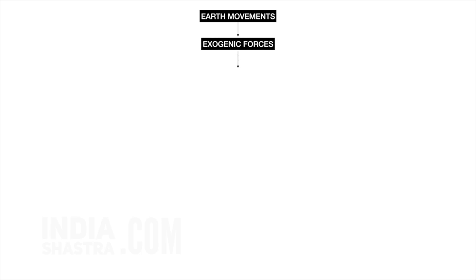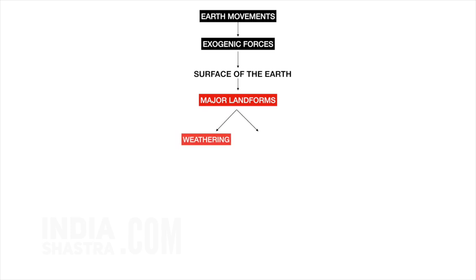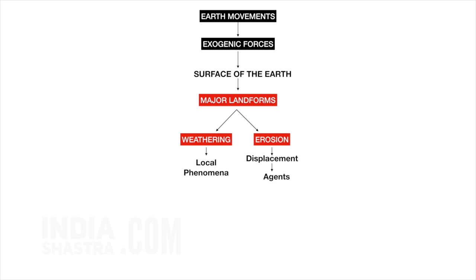These exogenic forces act on the landscapes. Landscape is worn away by two processes: weathering and erosion. Weathering occurs locally and there is no displacement, whereas in erosion there is displacement of the eroded material. Erosion is the wearing away of the landscape by different agents like water, wind and ice. The eroded material is carried away or transported by water, wind and eventually gets deposited.